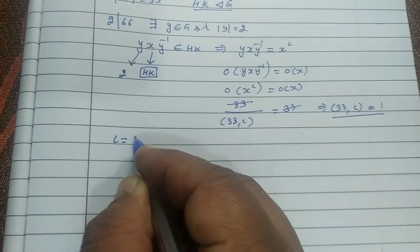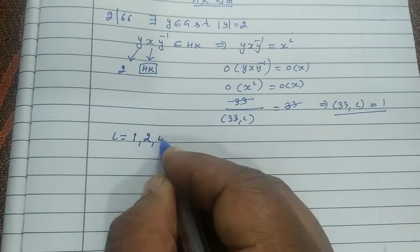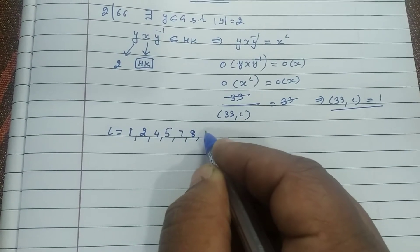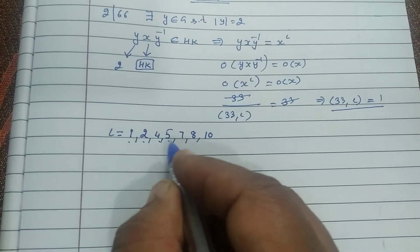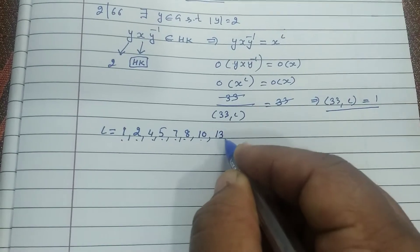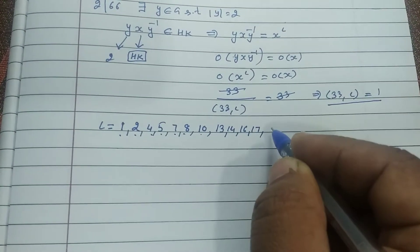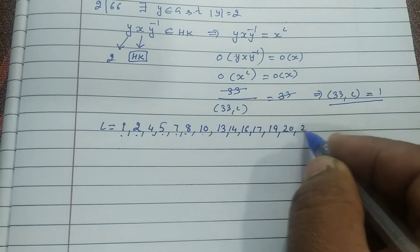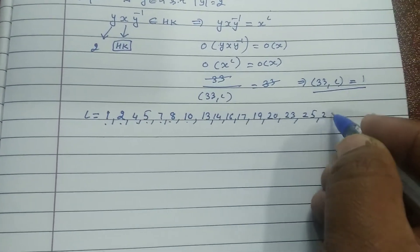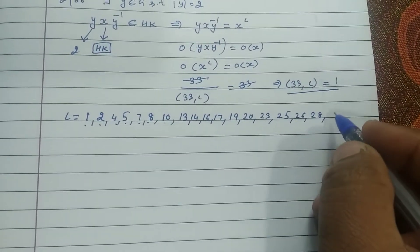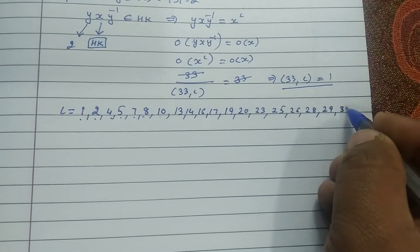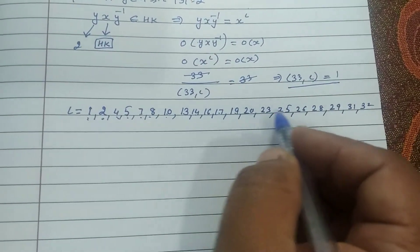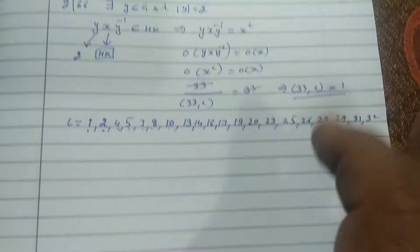So i can be 1, 2, 4, 5, 7, 8, 10, 13, 14, 16, 17, 19, 20, 23, 25, 26, 28, 29, 31, 32. These many values of i are possible.